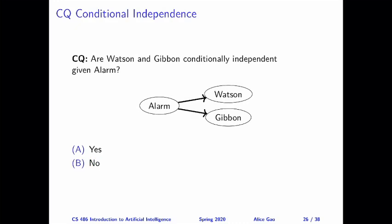Question number two: are Watson and Gibbon conditionally independent given alarm? The correct answer is yes. Given alarm, Watson and Gibbon are conditionally independent of each other. Intuitively, we can think of alarm as an event we're interested in, and Watson and Gibbon as noisy sensors for that event. The value of each sensor depends entirely on the event and nothing else. So if we know whether the event is happening or not, the value of each sensor is fixed, and the two sensors cannot affect each other in any way. That's why given alarm, Watson and Gibbon must be independent.